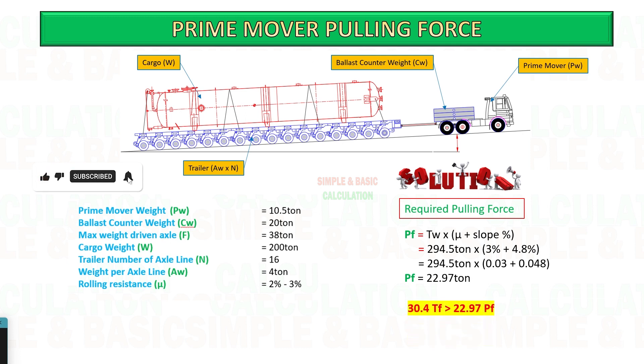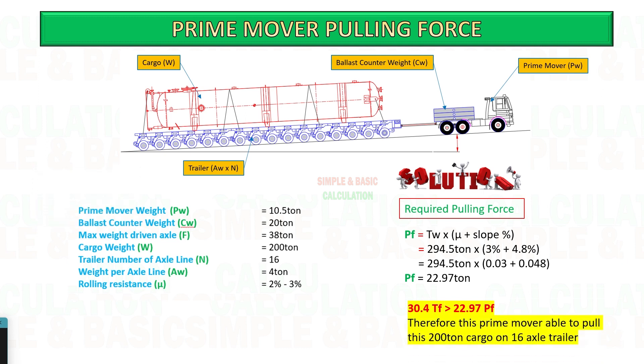The tractive force of the prime mover is more than the required pulling force. Therefore, it is able to pull this cargo from point A to point B.